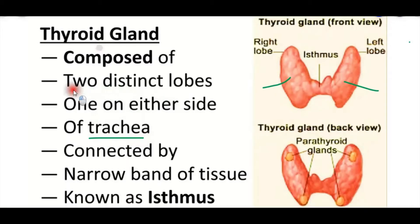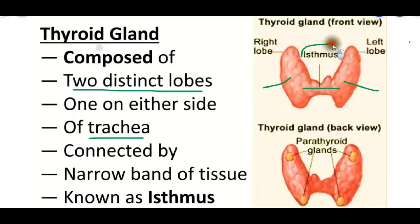How many lobes are present? Two lobes. It is composed of two lobes and these two lobes are connected by a narrow band of tissue. This narrow band of tissue is known as isthmus. So this is the right lobe and this is the left lobe, connected by the narrow band of tissue called isthmus.